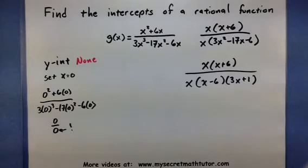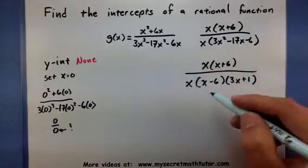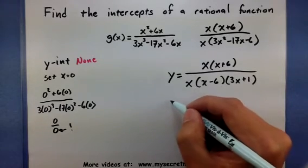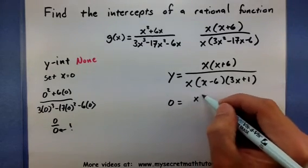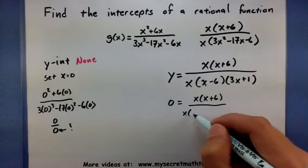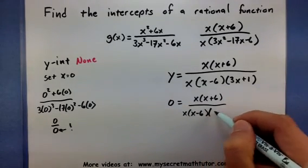Well let's see if we can find the x intercept. This works by setting y equal to 0. So maybe we take the factored one. Imagine a y right there and set that equal to 0. Now essentially we want to know when will the top equal 0.